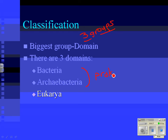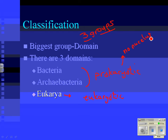Bacteria and archaebacteria are what we call prokaryotic, meaning they have no nucleus in their cells. Eukarya are eukaryotic, meaning all of their cells have a nucleus. There are organisms in the world that don't have a nucleus in their cells — that might be a little confusing, but that's the key difference.